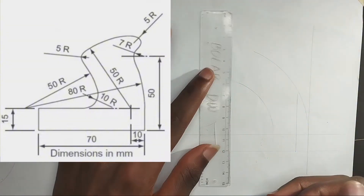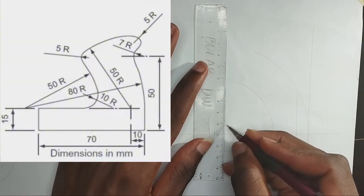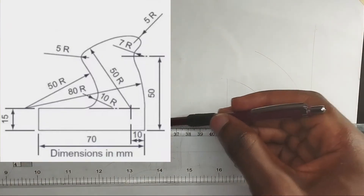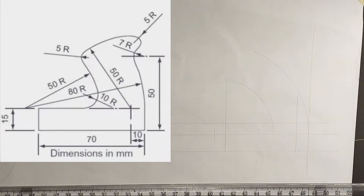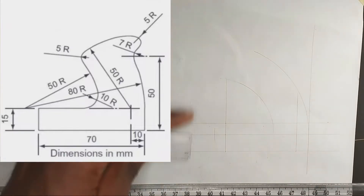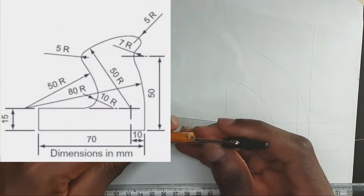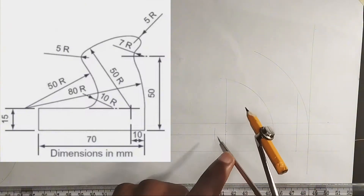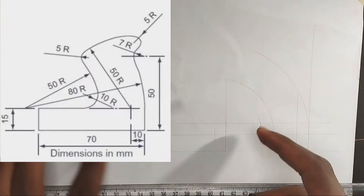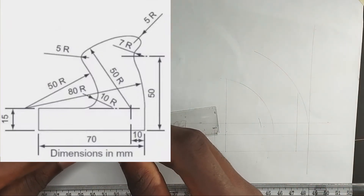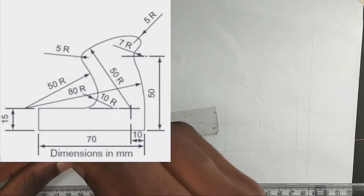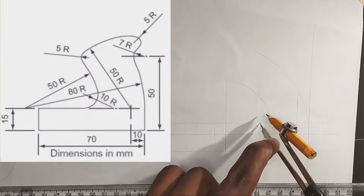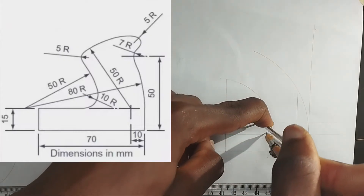So I'm going to pick my ruler and measure 10mm length upwards, then from this place draw a straight thin line in this manner. Now I'm going to pick radius 40mm on my compass and place it at this point, then strike an arc. From this arc, I'm going to pick 10mm — which is the main radius given — from this particular point, place it at this point, and join it.